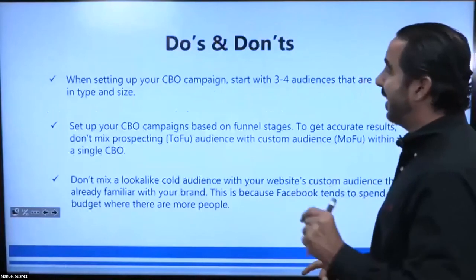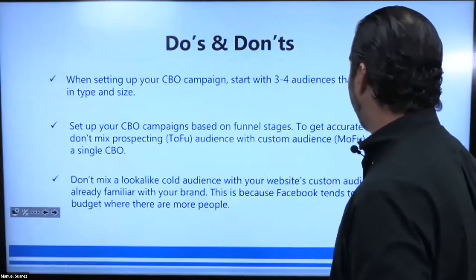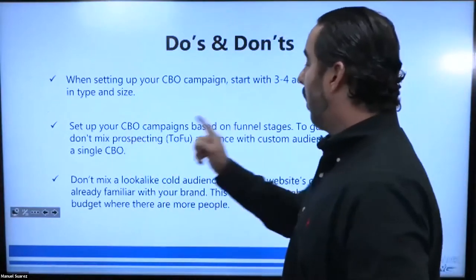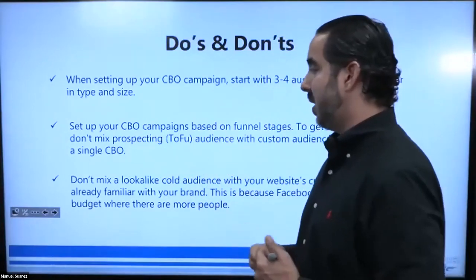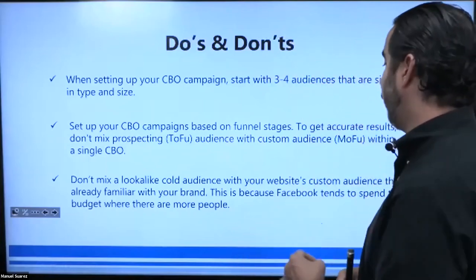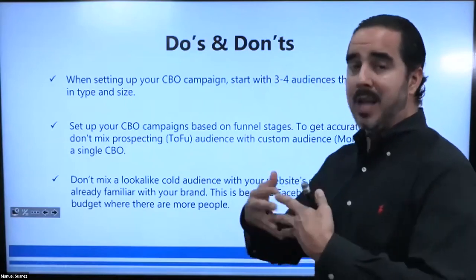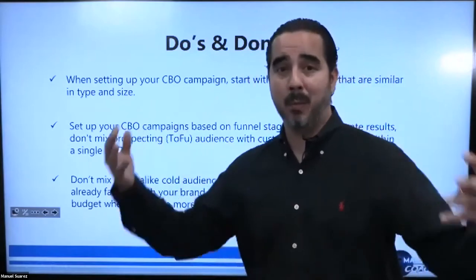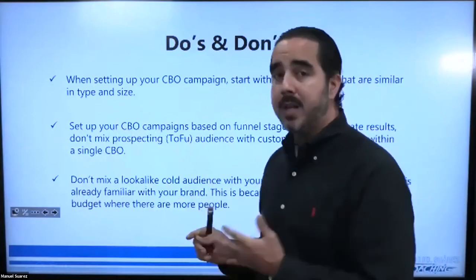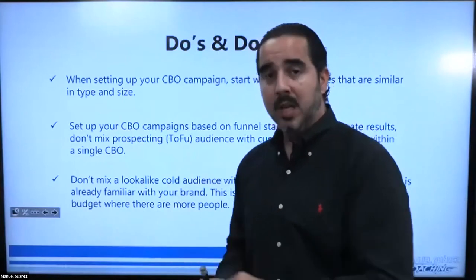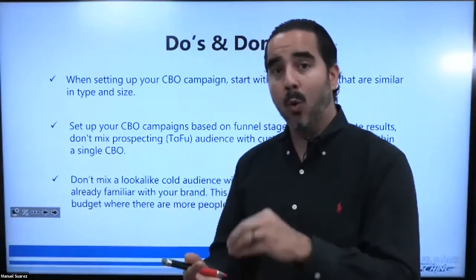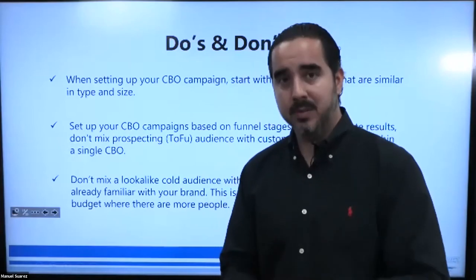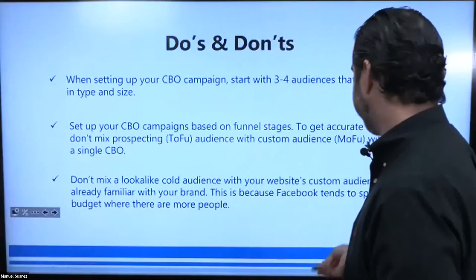Testing is the best way to do it. When setting up a CBO, start with three to four audiences that are similar in type and size. Set up your CBO campaigns based on funnel stages to get accurate results. Don't mix prospecting top-of-funnel audiences with custom audiences within a single CBO. Don't mix a lookalike audience with your website's custom audience that is already familiar with your brand, because now you have a top-of-funnel and a middle or bottom-of-funnel audience mixed in. You definitely want separation between these two. Don't mix up the strategies.